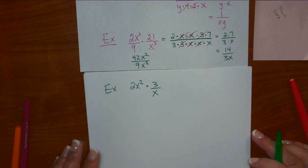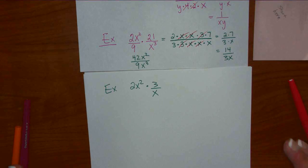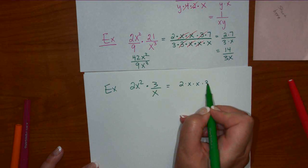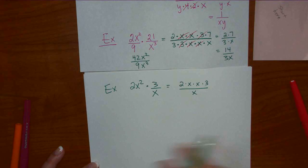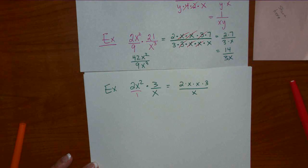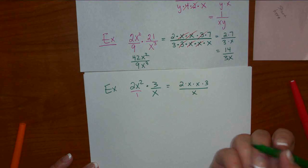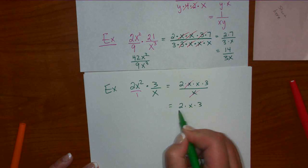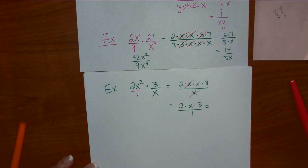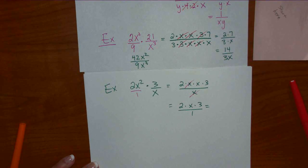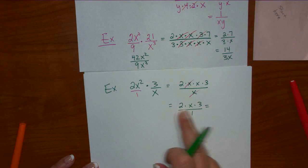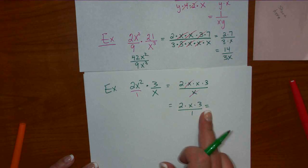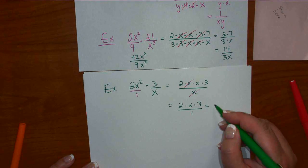It can also be a scalar: 2x squared doesn't have a bottom, but you can put a 1 on the bottom. So this is 2 times x times x times 3 over 1x. One of the x's cancels and nothing else. What we have on top is 2 times x times 3 over 1. The standard way to rewrite is to multiply: 3 times 2 times x equals 6x over 1, or just 6x.